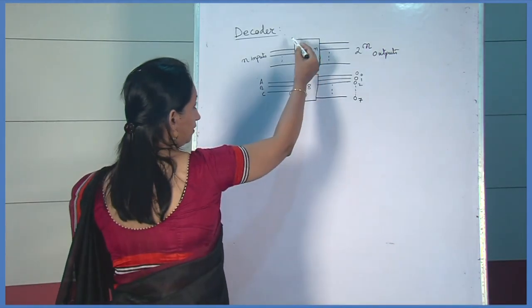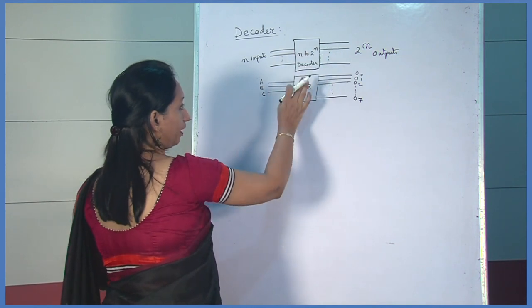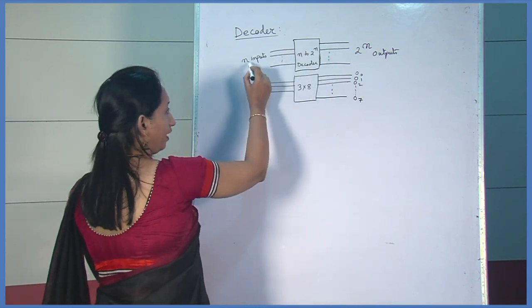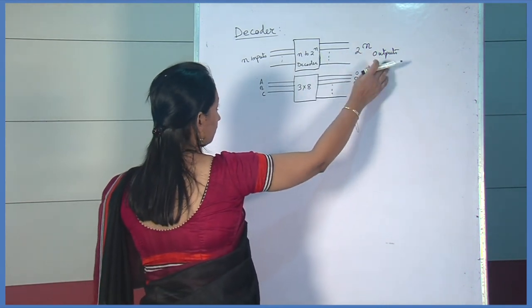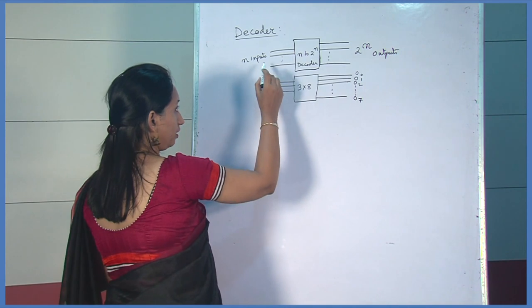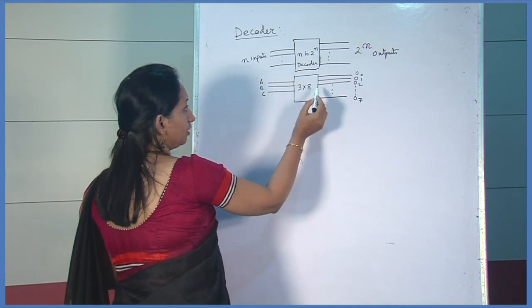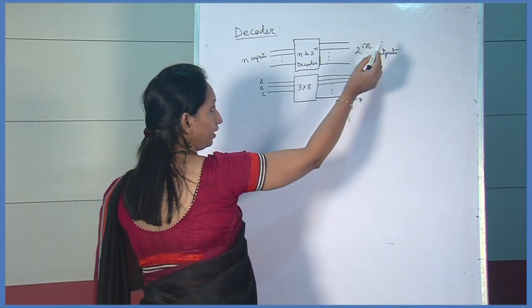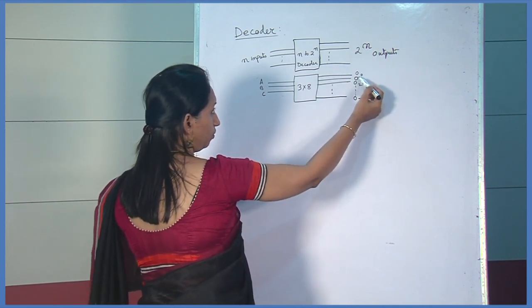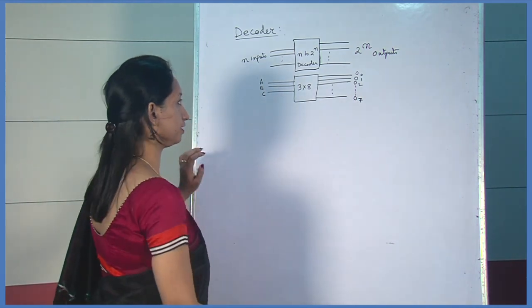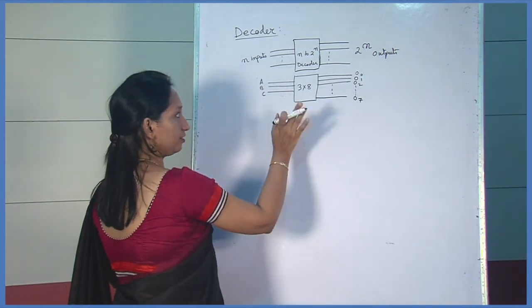Now we see the block diagram, truth table, and logic circuit of a decoder. This is a block diagram of an n to 2 to the power n decoder. Here n numbers of inputs decode to 2 to the power n outputs. If n is 3, that is 3 inputs, then the output will be 2 to the power 3 equal to 8. So 8 outputs, marked as O0, O1 to O7. It is a 3-to-8 decoder.